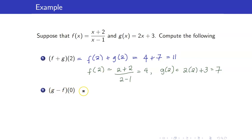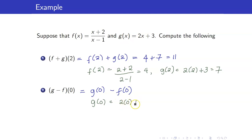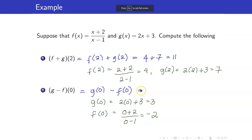Next, g minus f of 0 is g of 0 minus f of 0. Let's compute g of 0 first — substitute 0 for x, so that's 2 times 0 plus 3, which is equal to 3. And f of 0 is equal to 2 over negative 1, which is negative 2. Hence, g of 0 minus f of 0 is 3 minus negative 2, which is equal to 1.